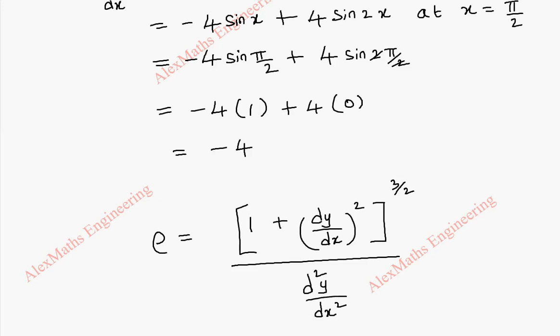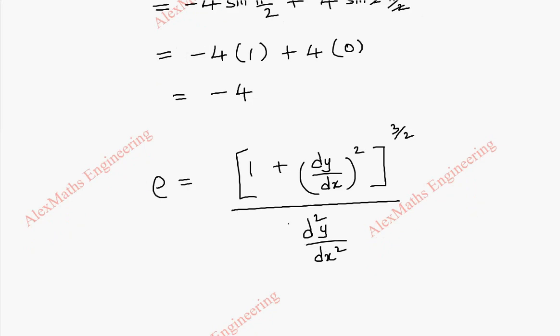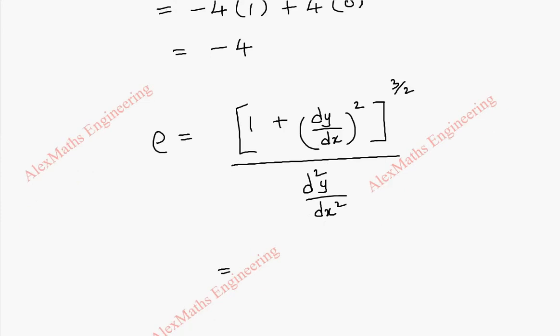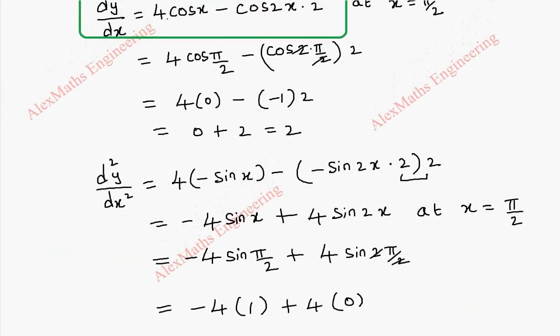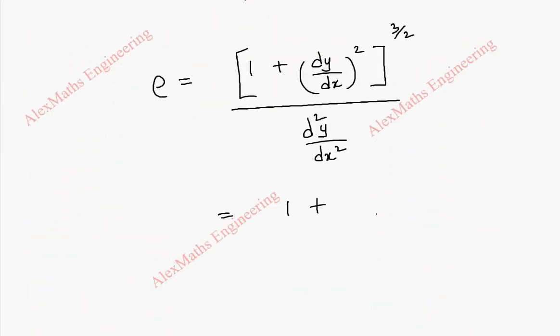And if there is any negative value we take its modulus and we make it as positive. So by substituting the value we get 1 plus value of dy by dx is 2. So this is 2 square then we have whole power 3 by 2 and this value is minus 4 and we have to take its positive value because radius of curvature cannot be negative.